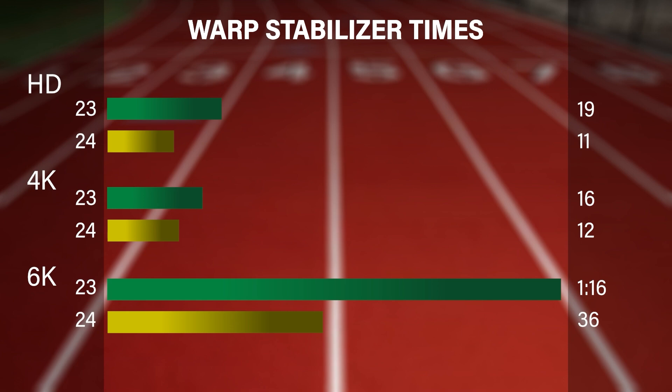It was a huge difference on the 6K version. So all around, top to bottom, everything is much faster in this version. You don't have to do anything other than just install the latest update and run the same files through it. The analysis is now multi-frame based, so all of your warp stabilizing clips are going to be faster.